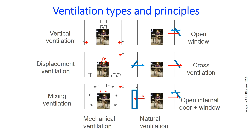Next to the type of ventilation, different ventilation principles can also be selected, such as mixing ventilation, displacement ventilation, cross ventilation, and personal ventilation. With mixing ventilation, air pollutants are diluted, reducing the number of infectious aerosols in the air. Displacement and cross ventilation move air horizontally or vertically through a space, replacing polluted air with fresh air. Personal ventilation supplies and/or exhausts air in the breathing zone of each person.